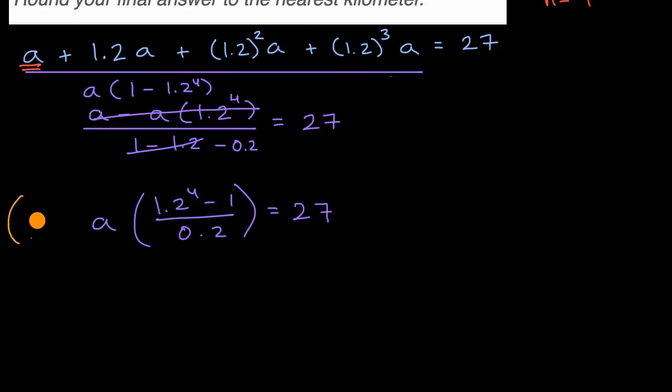And so, now I can just multiply both sides times the reciprocal of this. So, 0.2 over 1.2 to the fourth minus one. And then here, 0.2 over 1.2 to the fourth minus one. That cancels with that, that cancels with that. That's exactly why I did that.